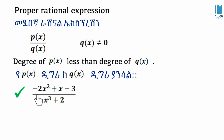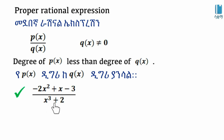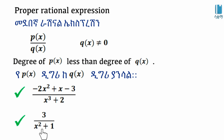As you can see, P(x) is x squared plus x minus 3, over x cubed plus 2. In this case, the leading term of the numerator has degree 2, and the leading term of the denominator x cubed has degree 3. Since the degree of the numerator is less than the degree of the denominator, this is a proper rational expression.